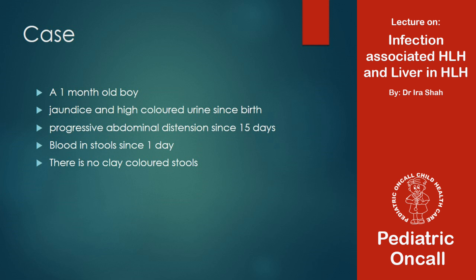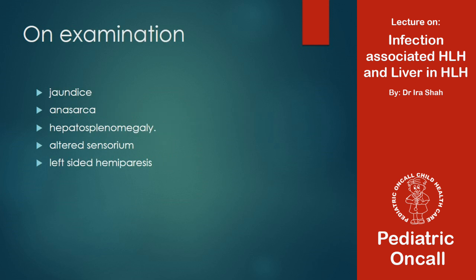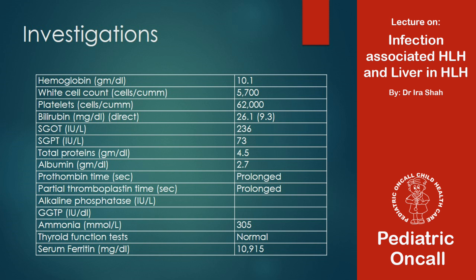A one-month-old boy came with jaundice and high-colored urine - neonatal cholestasis for us. He had progressive abdominal distension for 15 days and blood in stool, so he was a sick child. On examination: jaundice, anasarca, hepatosplenomegaly, altered consciousness, and left-sided hemiparesis. There was both CNS and liver involvement. Investigations showed pancytopenia - a full setting for HLH.